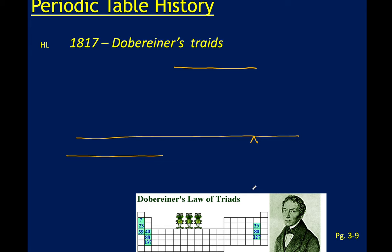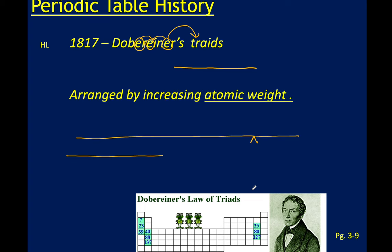After him we move on to Döbereiner, who is responsible for generating what are called triads. The way to remember Döbereiner and triads is that there are three E's in his name — so three for triads. Something that most people involved with the history of the periodic table have in common is how they organized their elements: by increasing atomic weight. You need to know and be able to state that.